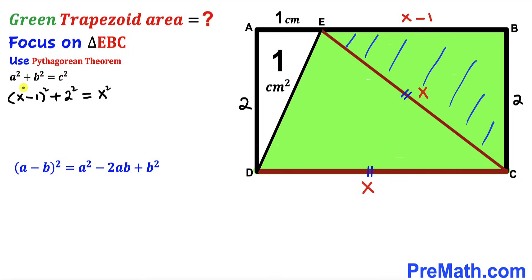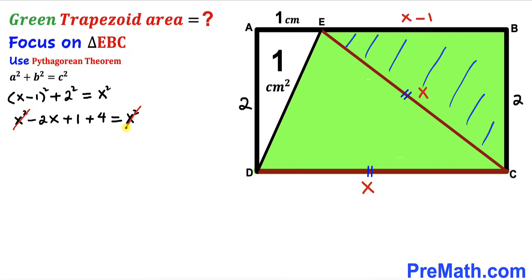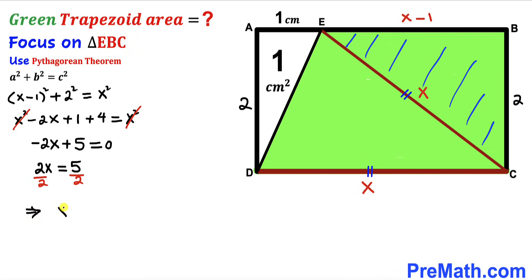Applying the identity gives x² − 2x + 1 + 4 = x². The x² terms cancel, leaving −2x + 5 = 0. Moving 2x to the other side: 2x = 5, then dividing both sides by 2 gives x = 5/2 centimeters.